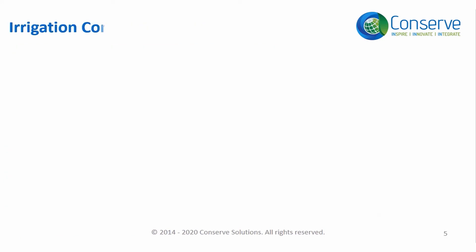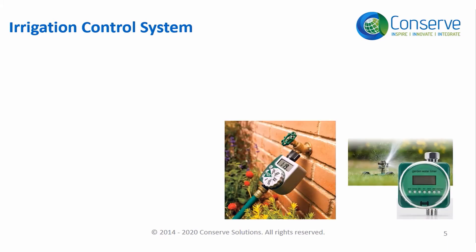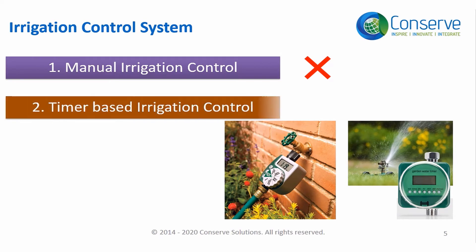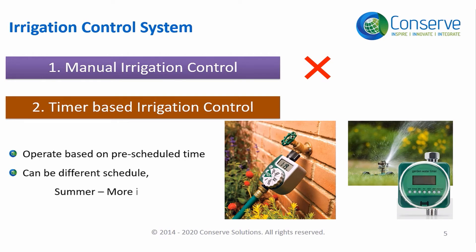The basic irrigation control system is manual, and manual systems should be completely avoided. Timer-based controls operate the irrigation system based on a pre-scheduled time. The schedule can be different for different seasons — for example, summer timing should be more and winter timing should be less.